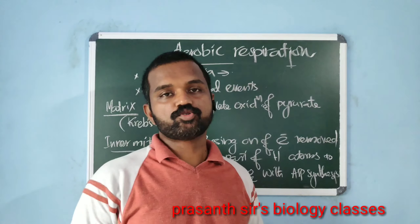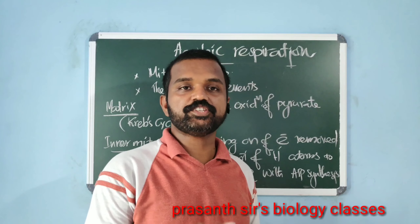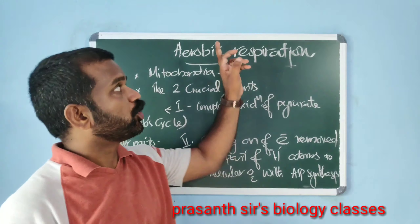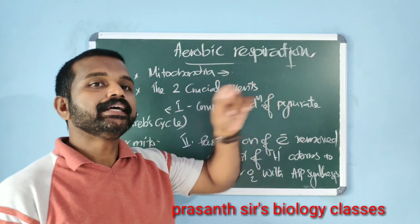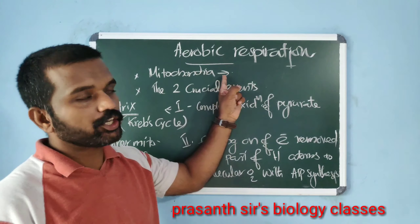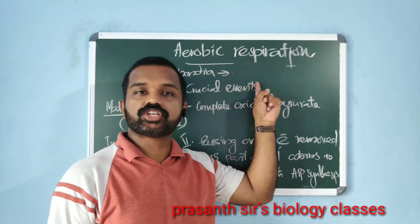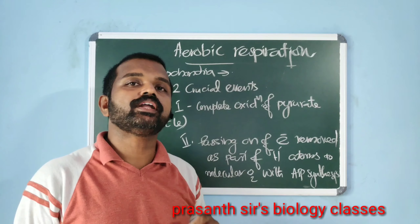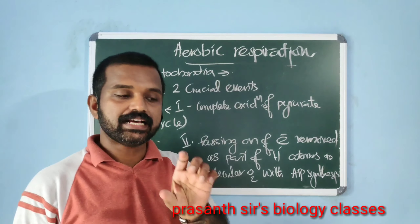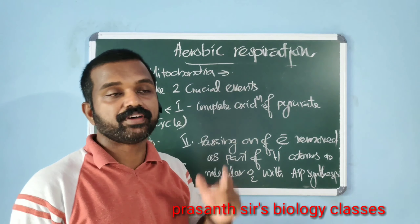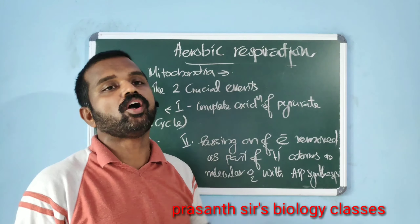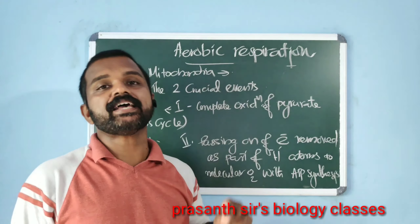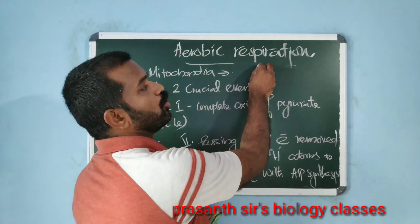Welcome to Smart Law Office. In this video we'll see the chapter plant respiration part 2, that is aerobic respiration. In eukaryotes, aerobic respiration takes place in mitochondria — mitochondria is the specific organelle associated with aerobic respiration. Whereas in prokaryotes it takes place in the cytoplasm itself, and respiratory enzymes are found in mesosomes.